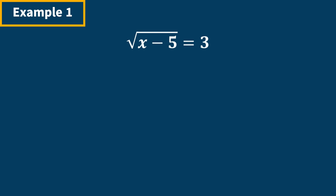Whenever it's a square root, that means there's supposed to be a little two in there. We raise it to whatever that number is — in this case it's a square root, so that's a two, meaning we're going to square the entire thing. What you do to one side you have to do to the other. When you square a square root, they cancel, and what we're left with is just what's on the inside: x minus 5.